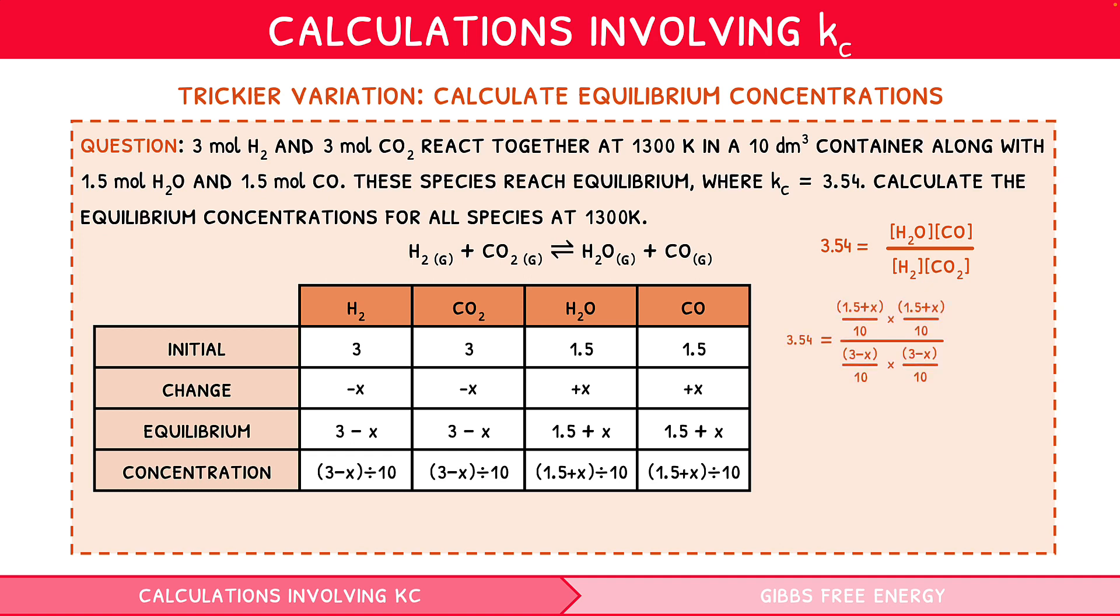This can be simplified to 3.54 equals 1.5 plus X over 10 squared divided by 3 minus X over 10 squared. From here, it is simply a matter of rearranging. We recommend first square rooting the whole equation, to give the square root of 3.54 which equals 1.5 plus X over 10 divided by 3 minus X over 10. Then, merge the fractions to give root 3.54 equals 1.5 plus X over 3 minus X. Now, rearrange to find X, which is 1.438.